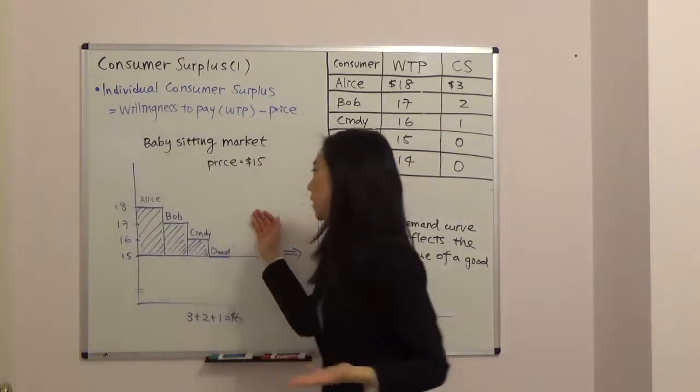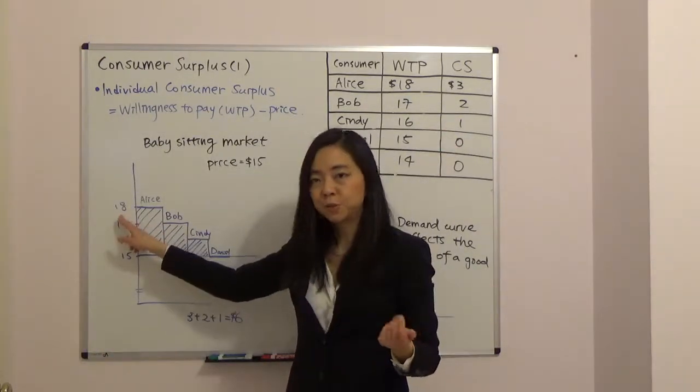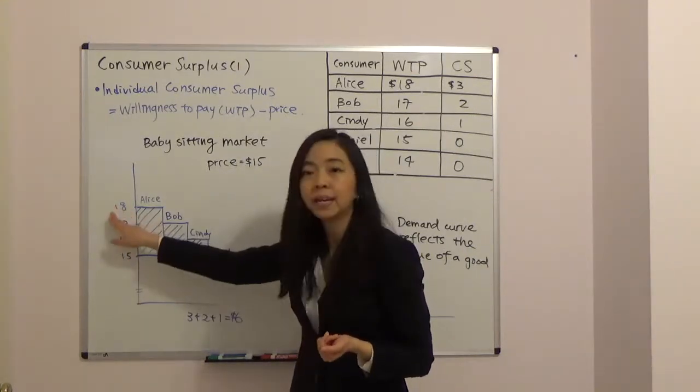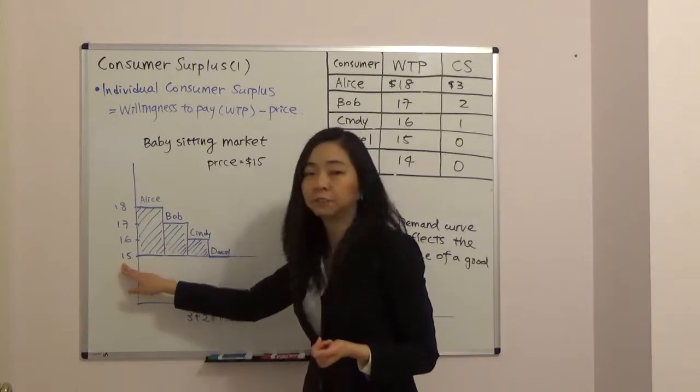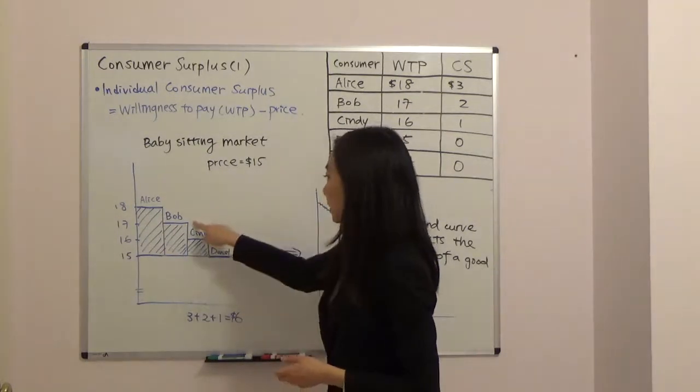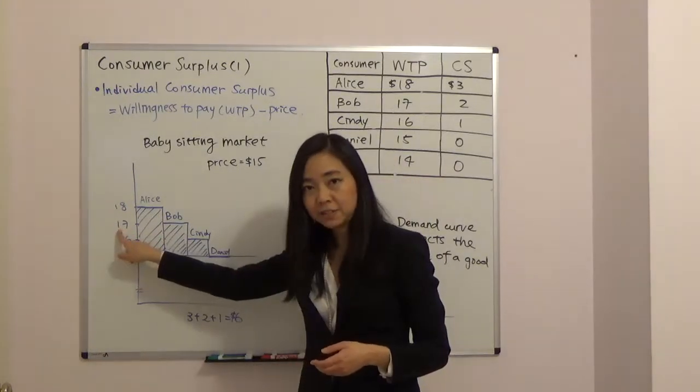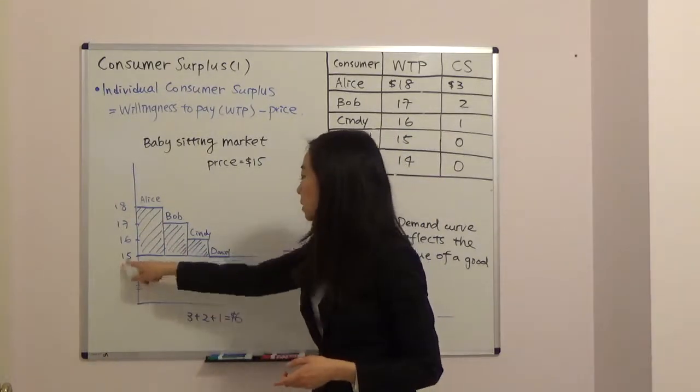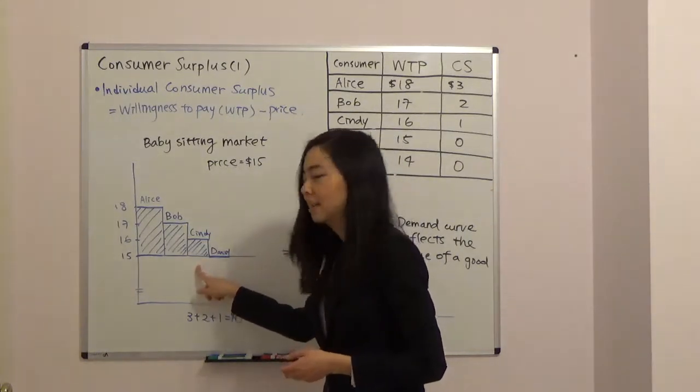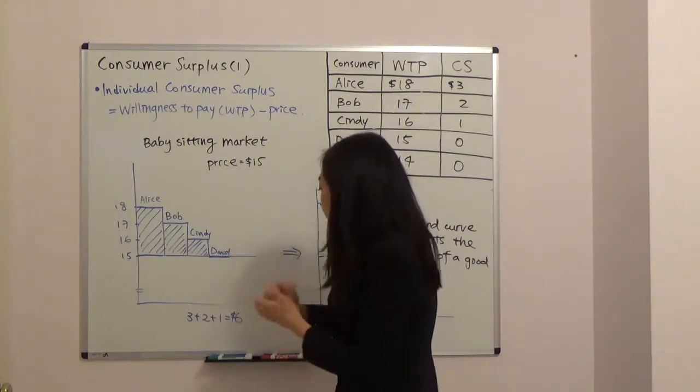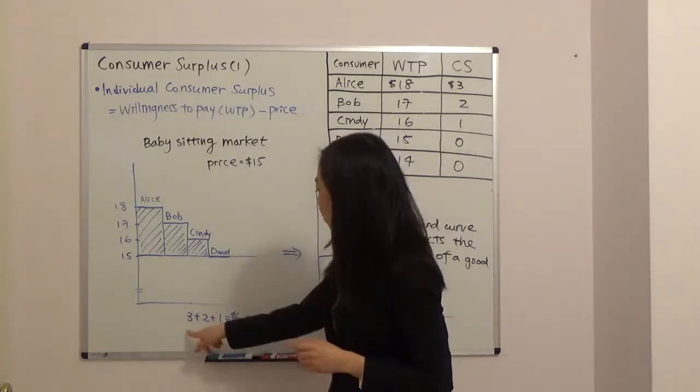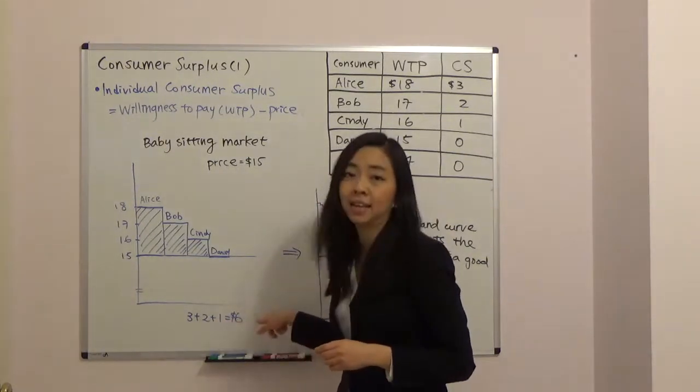Now graphically, you can see Alice, her willingness to pay is eighteen minus the price fifteen dollars. So her consumer surplus is three dollars. And Bob, his willingness to pay is seventeen and the price is fifteen. So his consumer surplus is two. And Cindy is one. And Daniel's is zero. So we can sum up the consumer surplus of the entire market. There will be three plus two plus one, and that gives you six.